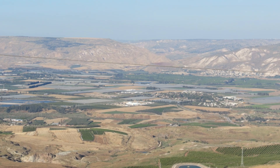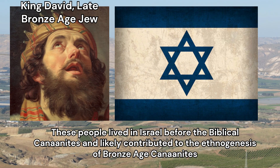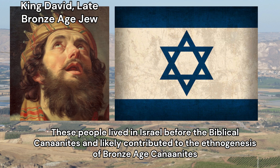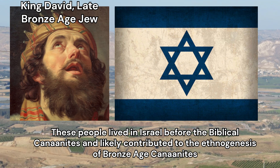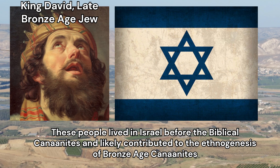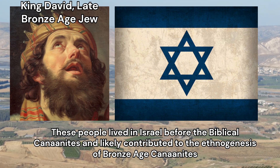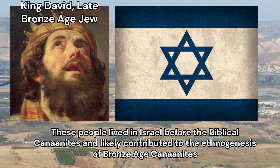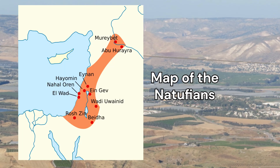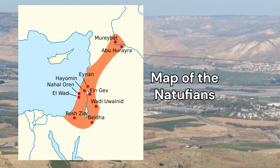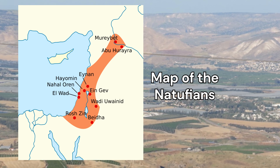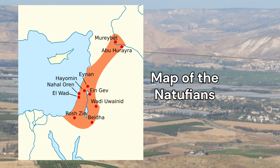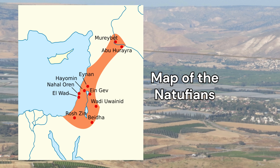The Chalcolithic inhabitants of ancient Israel were a significant population in the region during the late 5th to early 4th millennium before the Common Era. These early inhabitants of Canaan descended from a mix of different ancestral populations with deep ties to the Natufians, Levantine agriculturalists, Anatolian Neolithic farmers, and even Iranian Neolithic farmers. The Natufians, who lived around 12 to 9 millennia before the Common Era, were among the first known people to transition from a purely hunter-gatherer lifestyle to a more sedentary existence, laying the groundwork for early agriculture.